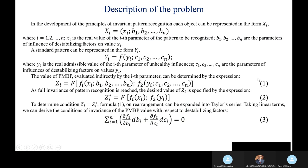In the development of the principles of invariant pattern recognition, each object can be represented in the form X_e, where e equals 1 to n. X_e is the real value of the parameter of the pattern to be recognized. b_1 to b_n are the parameters of influences of establishing factors of the value X_e. A standard pattern can be represented in the form Y_e, where Y is the real admissible value of the parameter of the unhealthy influences.